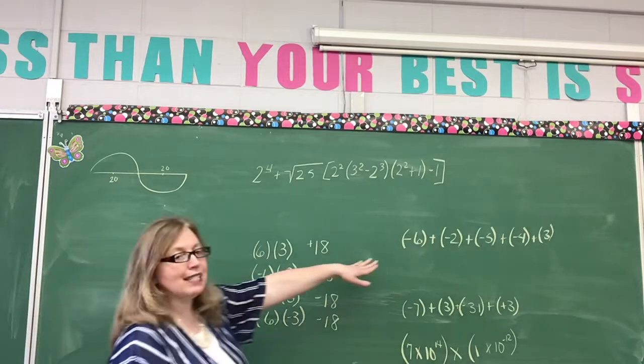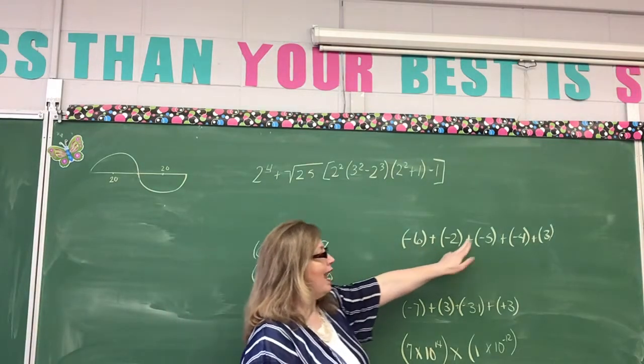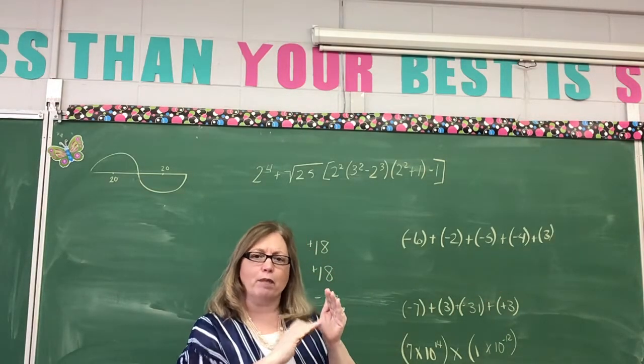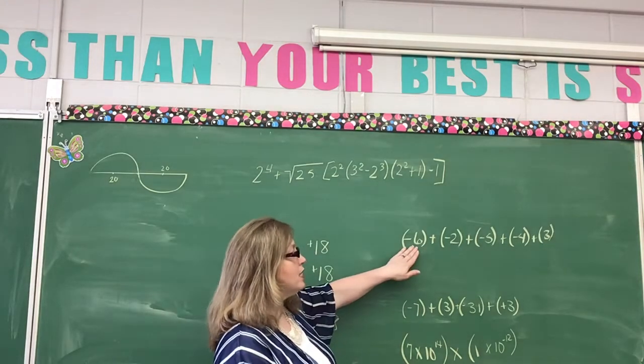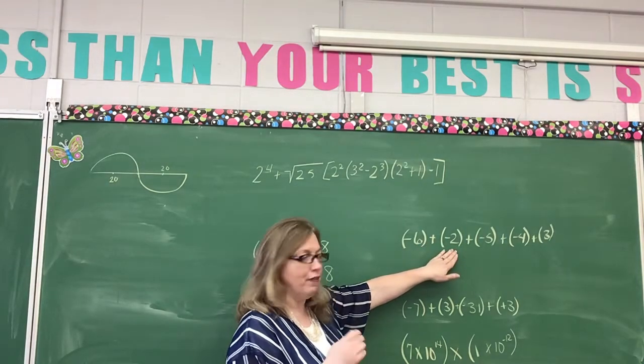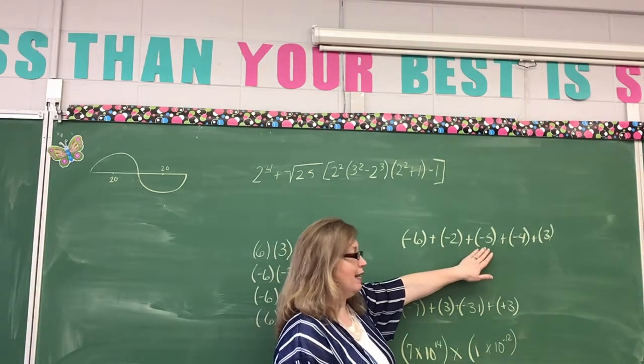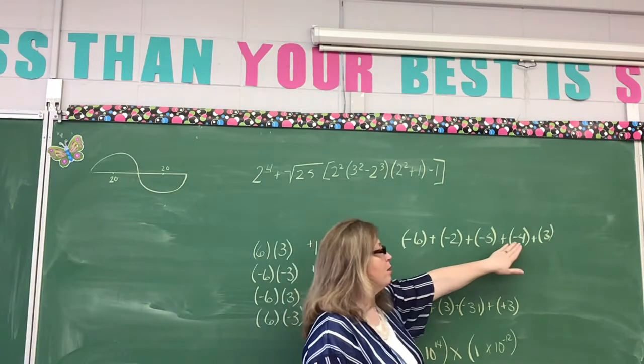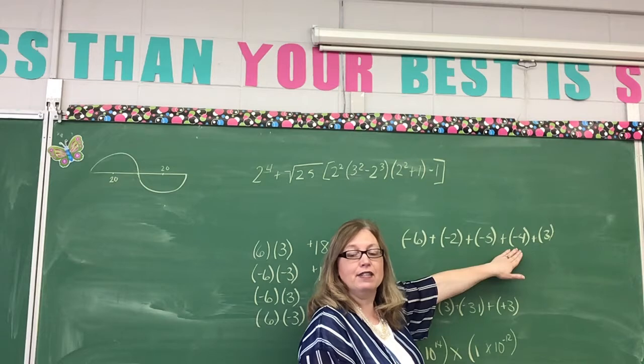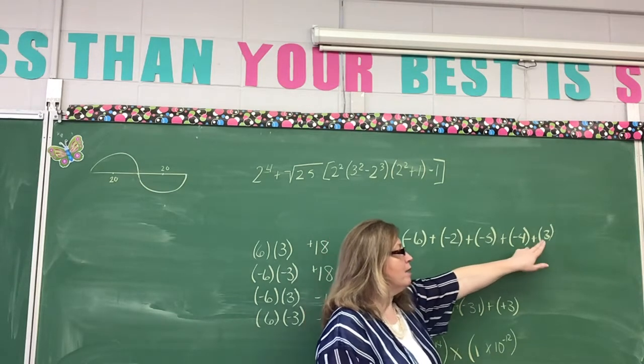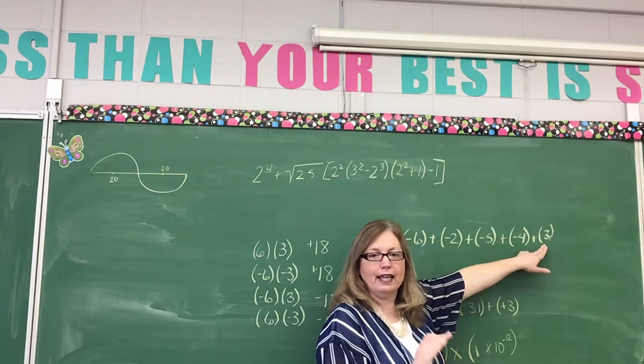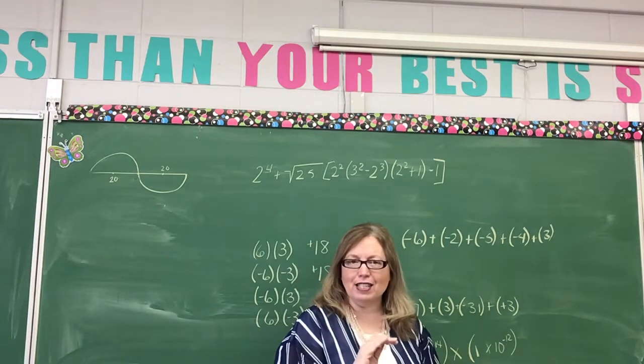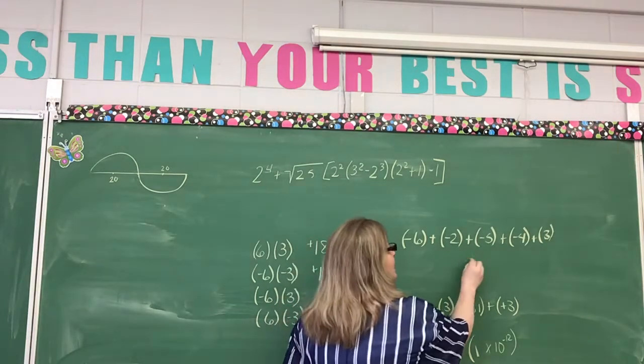All right, let's look over here. We're going to add some positive and negative numbers. You can see that I'm adding all of these, and everything has a parenthesis around it. That's to put the sign with that number, and then we're adding everything. So we're going to say negative six plus negative two, negative eight. Negative eight plus a negative five is negative 13. Negative 13 plus a negative four is negative 17. Negative 17 plus a positive three is going to be negative 14.